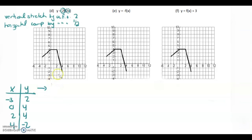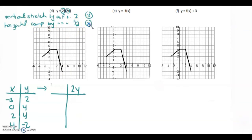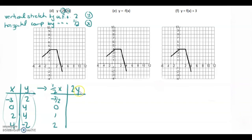How does that map? We have a vertical stretch by a factor of 2, so vertical affects the y — we multiply every y by 2. Then it's a horizontal compression, which affects the x, so we go one half of all the x's. Take all the x's from the original and halve them: we get negative 3 halves, 0, 1, 2. Take all the y's from the original and double them: 4, 8, 8, negative 4.